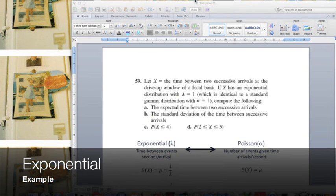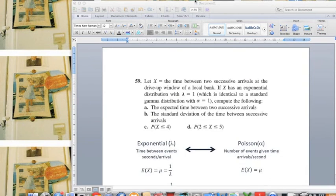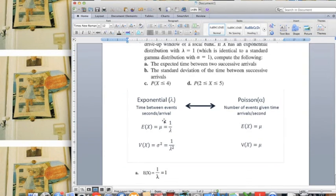Now we are going to see an example of exponential distribution. And this question is from the book Chapter 4, Question 59. And this question assumes that the x has an exponential distribution with lambda equals to 1, and it asks about the expected value and standard deviation of time between successive arrivals for part A and part B. As we talked before, the expected value is 1 over lambda, and variance is 1 over lambda squared.